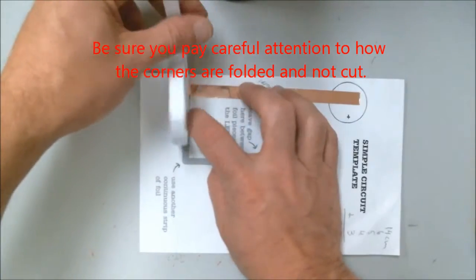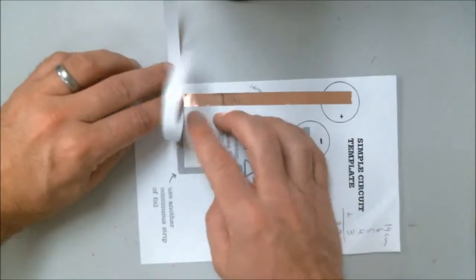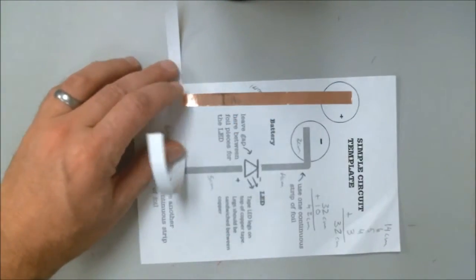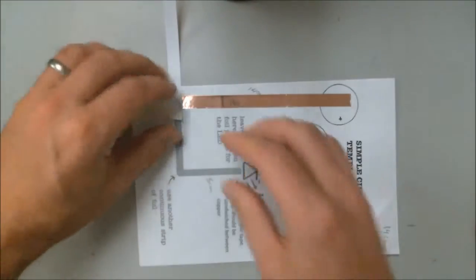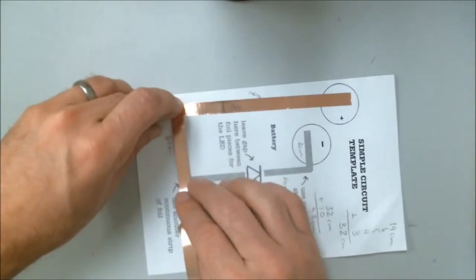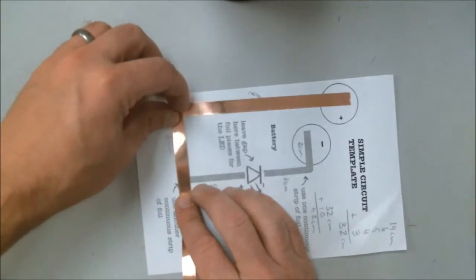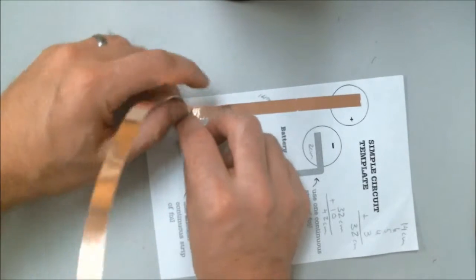Now at my first corner, I'm going to fold away from the direction I want to go so that the tape is upside down and trim that off so it's a little easier to see. Then I'm going to fold back over the top. Now the tape is going the right direction and you can see that the corner is nice and folded and not cut.